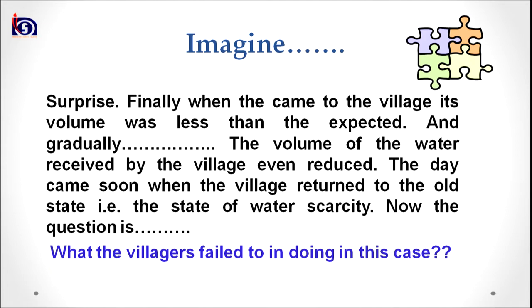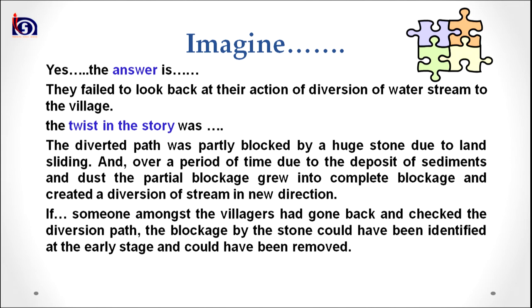The day came soon when the village returned to its old state of water scarcity. What the villagers failed to do was look back at their action of diverting the water stream. The twist in the story was that the diverted path was partly blocked by a huge stone due to landsliding, and over time deposits of sediments and dust turned the partial blockage into a complete blockage, creating a new diversion of the stream. Had someone gone back and checked the diversion path, the blockage could have been identified early and removed.